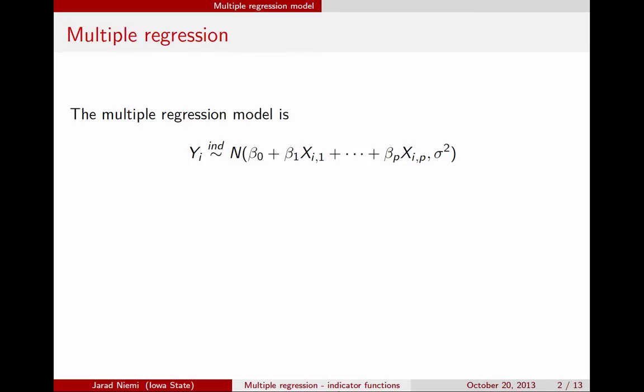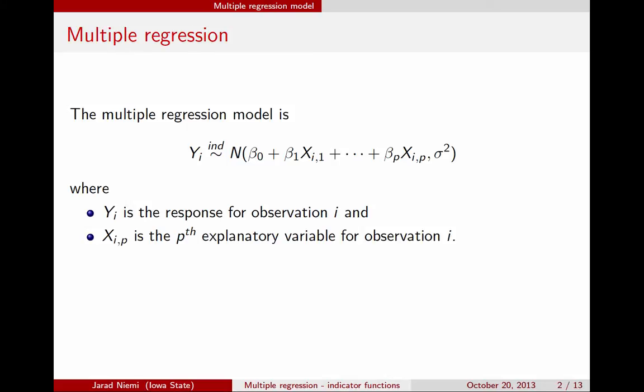Just as a reminder from the first mini-lecture, the multiple regression model is this model. Here we have yi as the response for observation i. These are assumed to be independent across observations and are normally distributed with a mean that depends on a set of explanatory variables. Now that we're into multiple regression, we have multiple explanatory variables, in this case up to p of them. Once we've incorporated these explanatory variables into the mean structure, the model assumptions are that there's a constant variance around this mean.